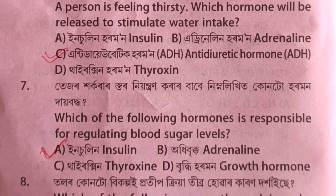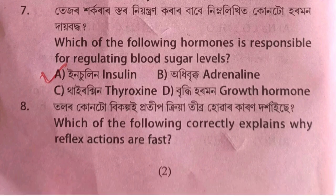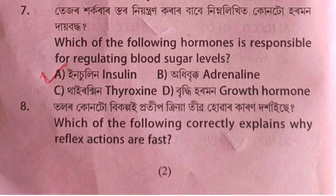Which of the following hormones is responsible for regulating blood sugar levels? The answer is insulin — it diverts and regulates blood glucose through an autonomous process.